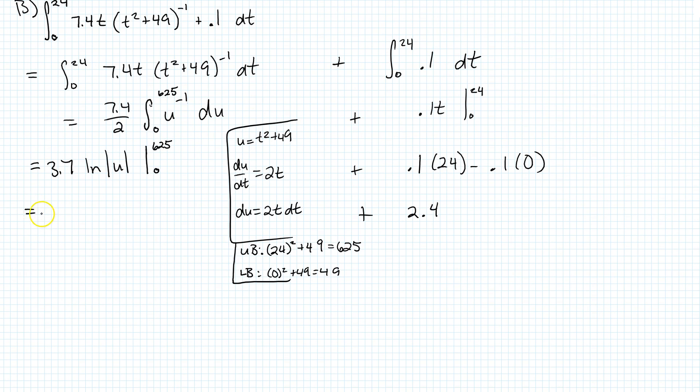So that is 3.7 ln 625 minus, oh not zero, what am I talking about here? This is 49 and this is 49. So ln 625 minus ln 49, and then we string it all together again.